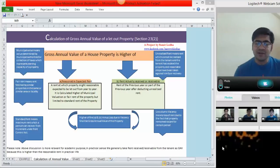So, while calculating reasonable expected rent, you have to take municipal valuation and fair rent whichever is higher but limited to standard rent.